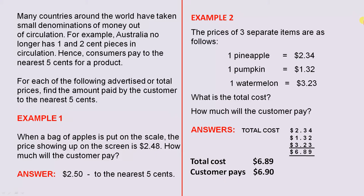Example 2. The prices of three separate items are as follows: one pineapple is $2.34, one pumpkin is $1.32, and one watermelon is $3.23. What is the total cost? How much will the customer pay? To arrive at the total cost, we have to add these three amounts up. That gives us a total cost of $6.89. The customer pays $6.90 to the nearest 5 cents.